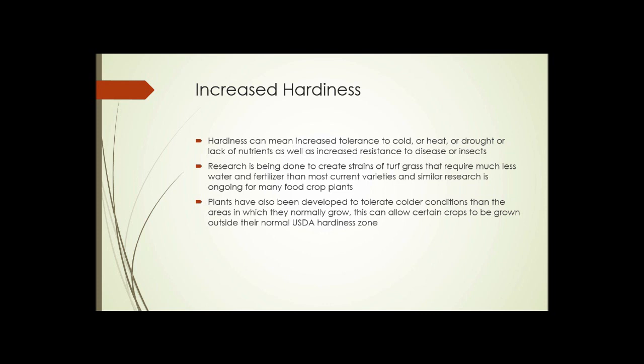Increased hardiness means increased tolerance to cold, heat, drought, or lack of nutrients, as well as increased resistance to disease or insects. Research is being done to create strains of turf grass that require much less water and fertilizer than most current varieties, and similar research is ongoing for many food crop plants. Plants have also been developed to tolerate colder conditions than the areas in which they normally grow, allowing certain crops to be grown outside their normal USDA hardiness zone. An example is peaches, which normally grow in zone 6 and warmer — some varieties have been developed that allow peach trees to survive as far north as zone 4.